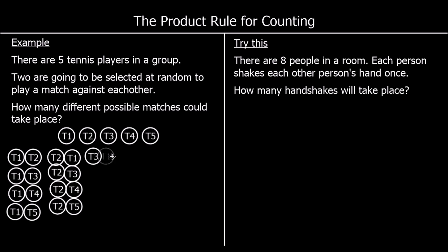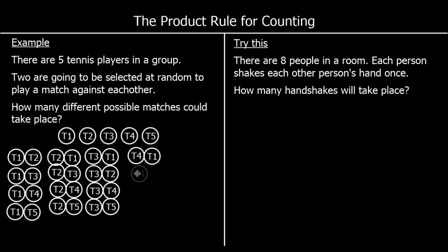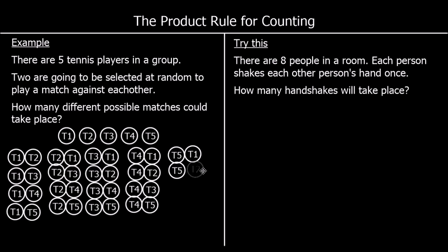Continuing: player three against player four and player five; player four against player one, two, and three; and player five against the others. So for each of the five players there are four possible matches. Each of the five tennis players could play against four different players, so that's five times four, which is 20 different options listed.